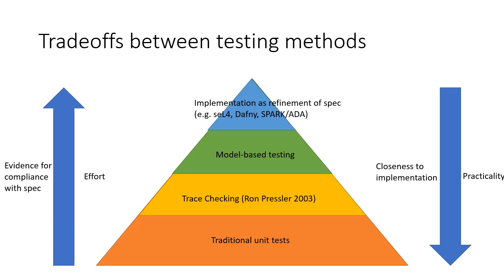Let's talk about testing strategies. There are trade-offs between testing methods, from the level of practicality and closeness to the implementation, to the formal level of compliance with a specification. At the bottom, we have traditional unit tests. Slightly above this is the trace checking concept introduced by Ron Pressler, to verify the execution traces of a program against a model. Above this, I consider there to be model-based testing, where we use some formal methods to generate test cases or scenarios to drive a program through. And at the top, you have a formal implementation as a refinement of a formal specification - for instance, the work in seL4, the operating system, Dafny, or SPARK Ada, which are checked languages.